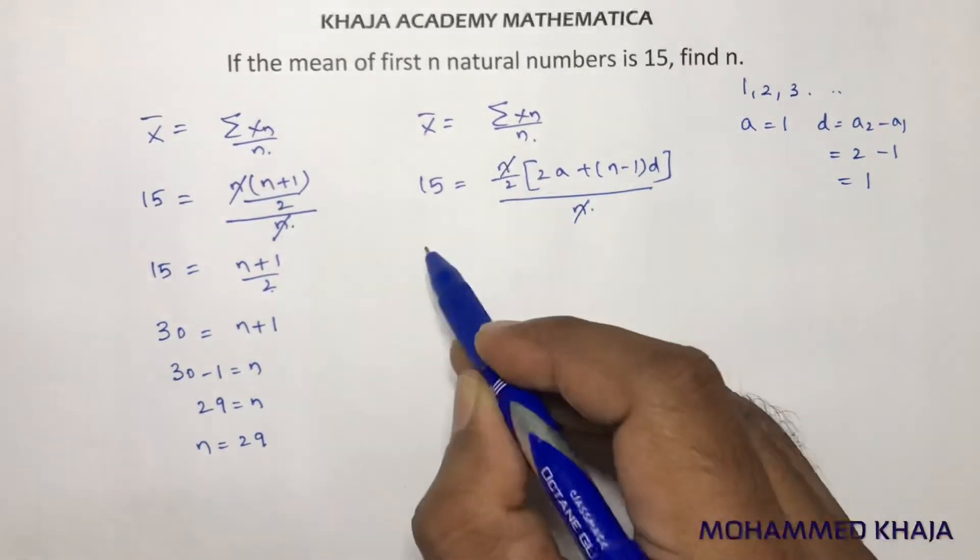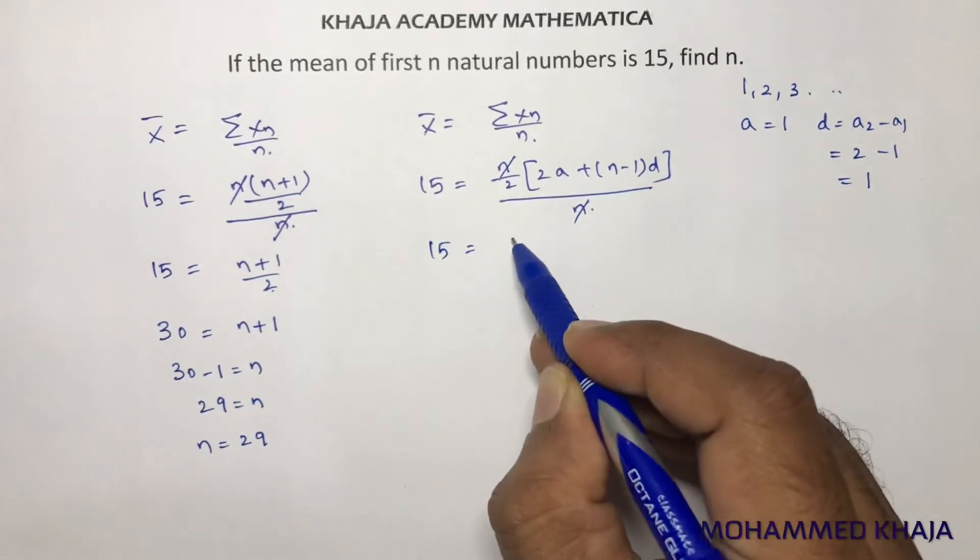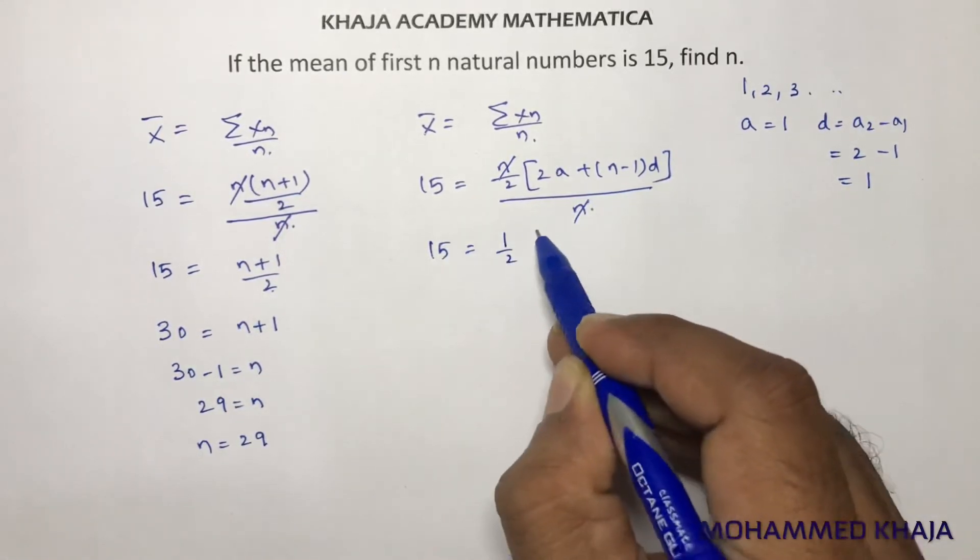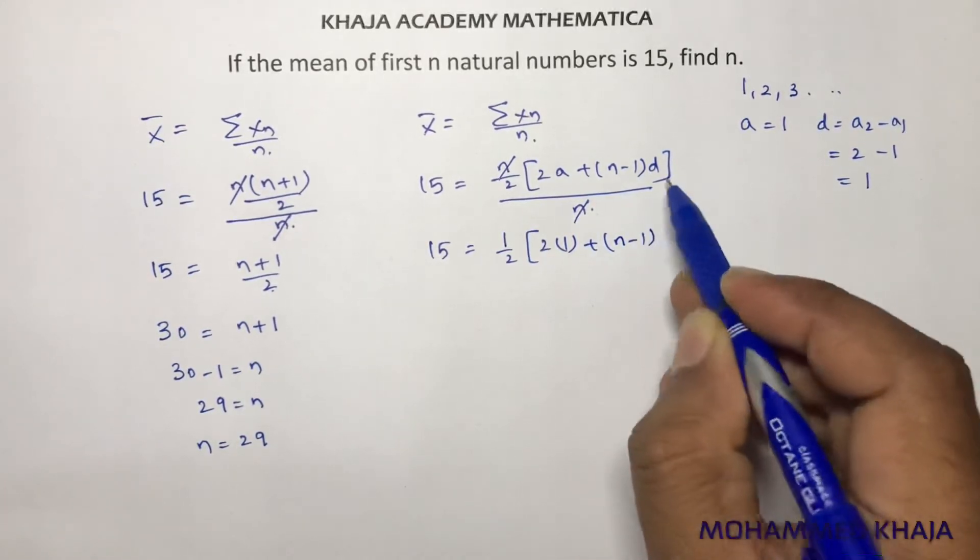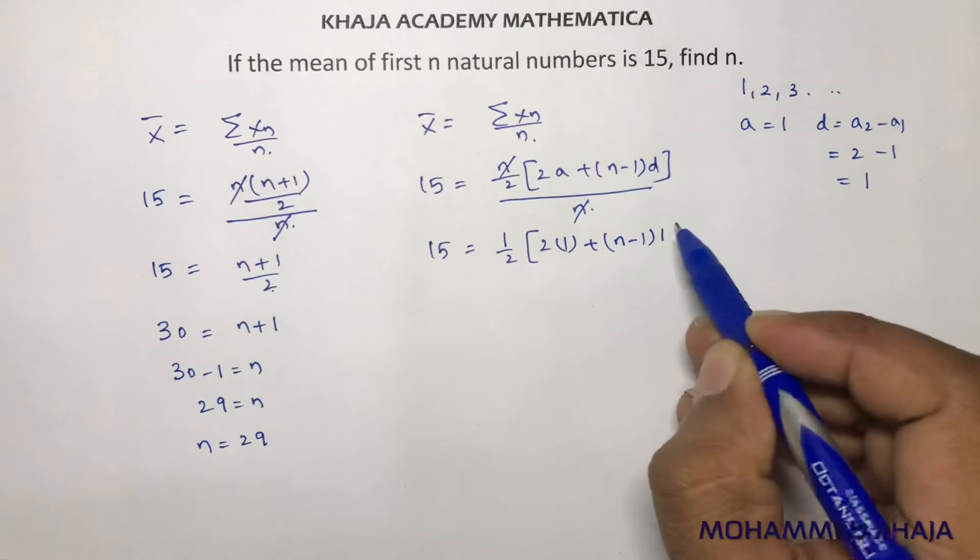Now, if I cancel n and n, 15 equals 1 by 2 into 2a. a is 1, plus n minus 1 into d. d is also 1.